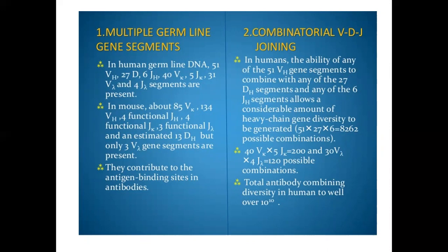In human germline DNA, there are 51 V-H, 27 D, 6 J-H, 40 V-kappa, 5 J-kappa, 31 V-lambda, and 4 J-lambda segments. In mouse, about 85 V-kappa, 134 V-H, 4 functional J-H, 4 functional J-kappa, 3 functional J-lambda, an estimated 13 D-H, but only 3 V-lambda gene segments are present. This variation in V, J, and D segments contributes to the antigen binding sites in antibodies — this is multiple germline gene segments.